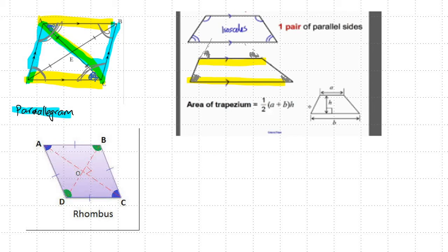Now we go to the rhombus. All sides are equal — this side equals this, and this side equals this. This angle here is equal to this angle, and likewise this angle is equal to this angle. It looks very similar to the parallelogram.